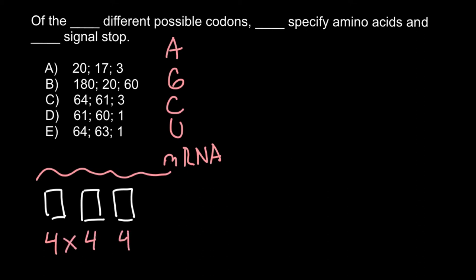So four here and four for the third position. If we multiply all these numbers, we get 64 combinations of trinucleotides or codons.